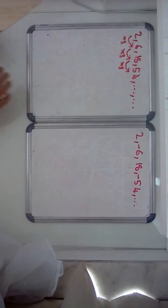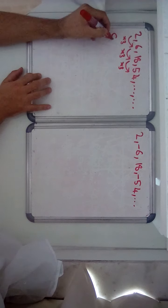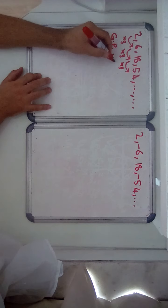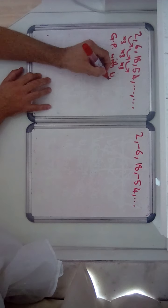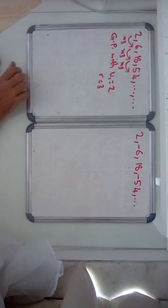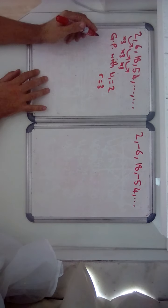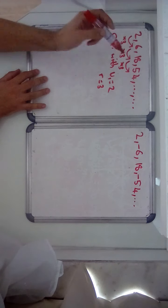So a geometric sequence is defined. It's a geometric sequence or GP, geometric progression, with u1 equals 2 and r equals 3. So all I need to do to get the next two terms is just multiply by 3.